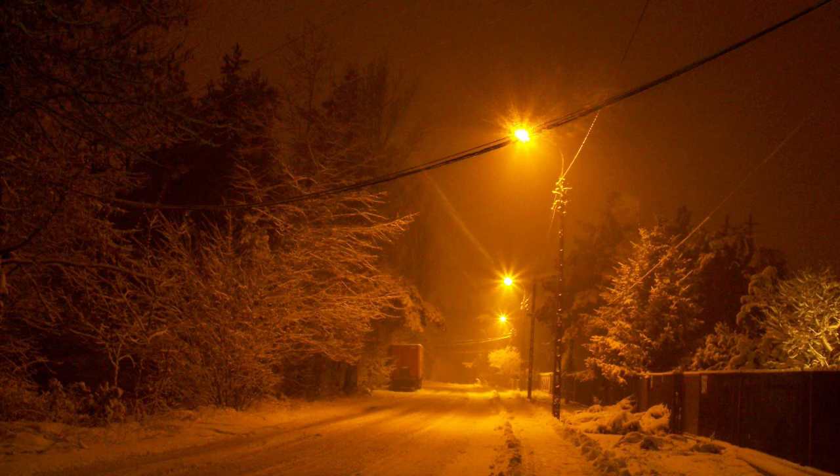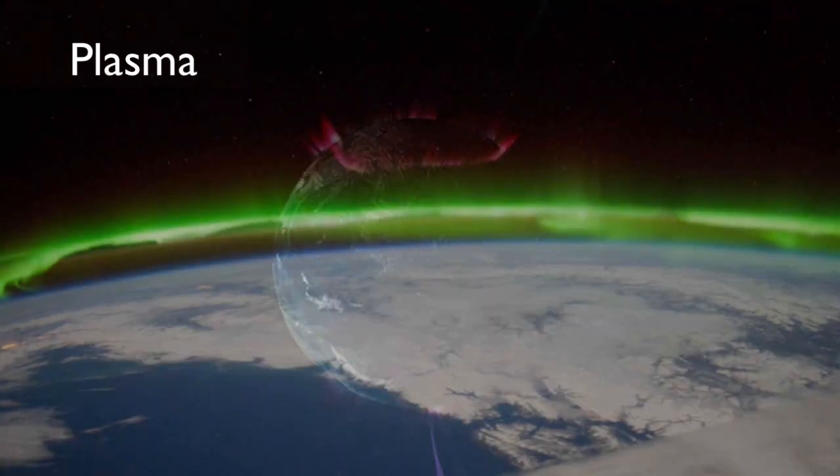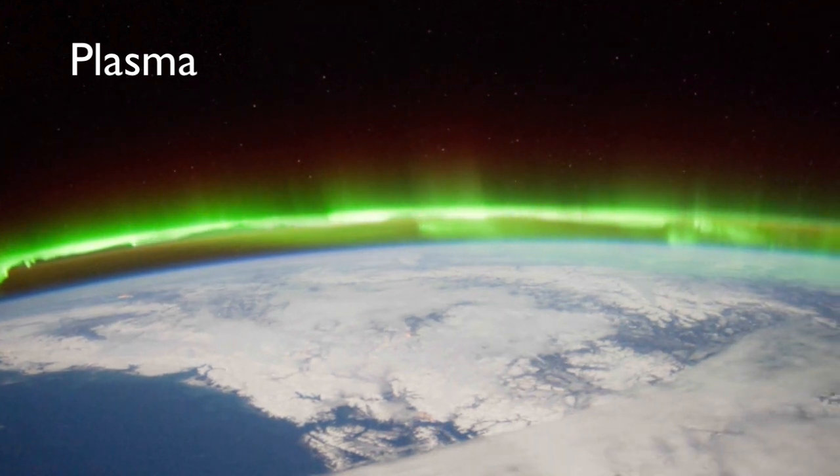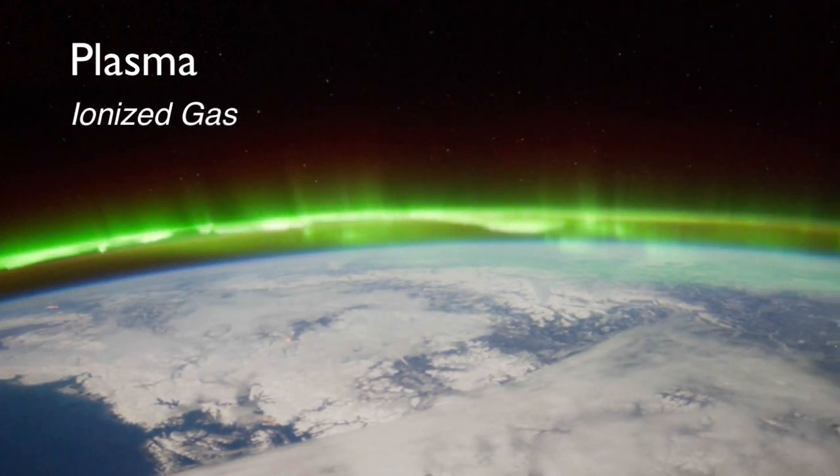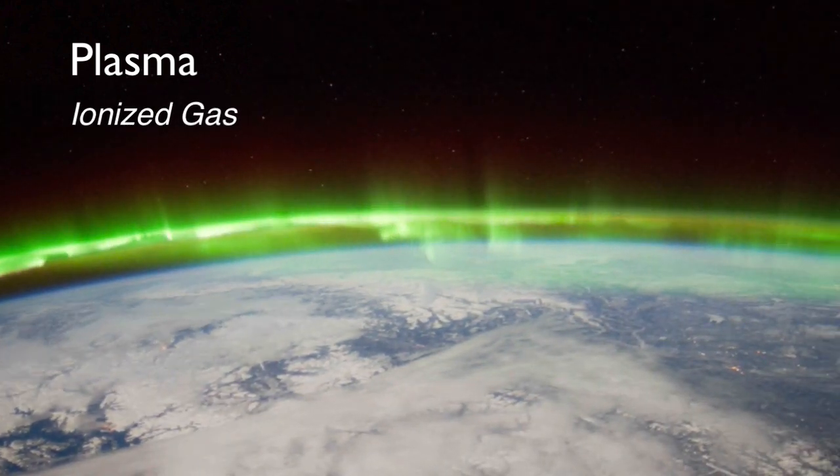Neon signs, fluorescent lights, street lights, our sun, even the aurora are all made of plasma, neatly described as an ionized gas. Good energy.